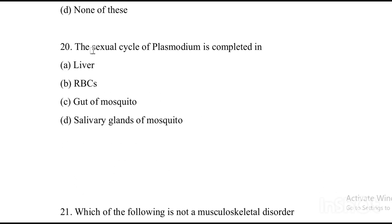Next question: The sexual cycle of Plasmodium is completed in — Option A: liver. Option B: RBC. Option C: gut of mosquito. Option D: salivary glands of mosquito. The answer is Option C, gut of mosquito.